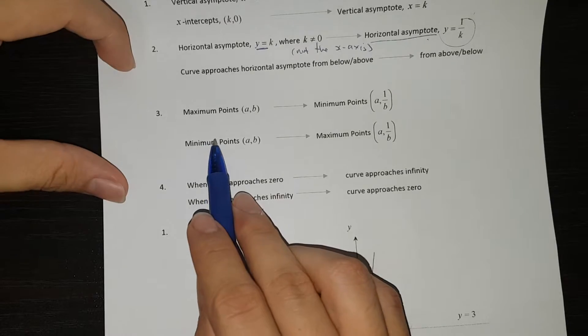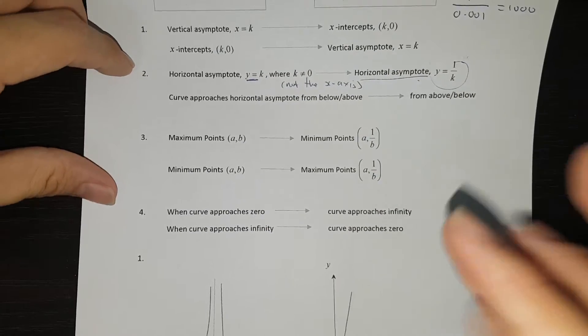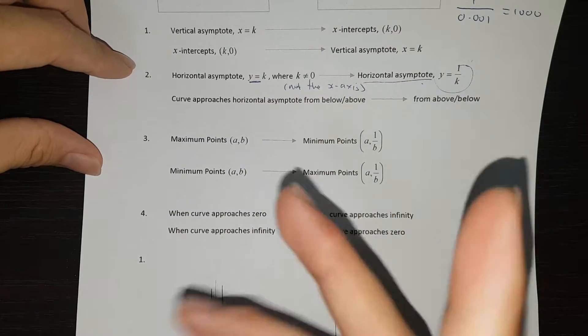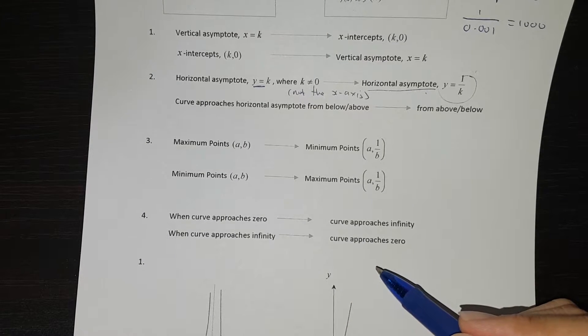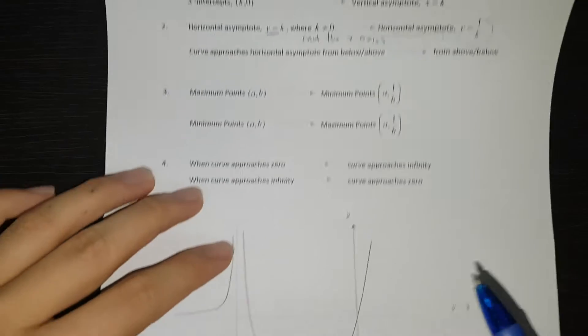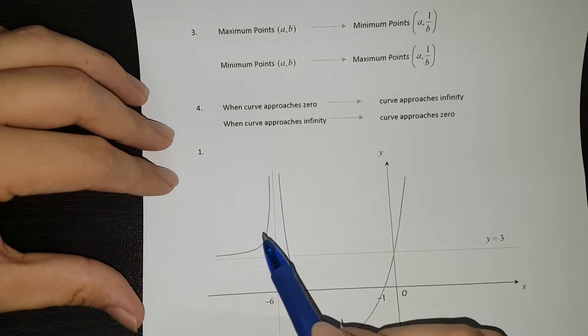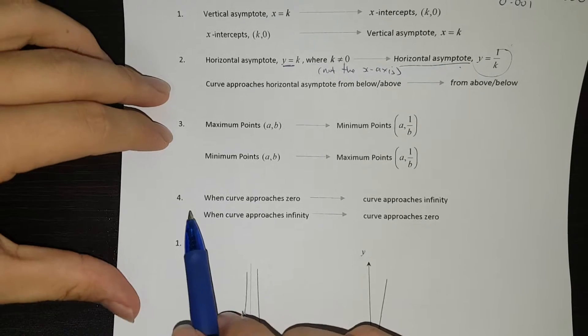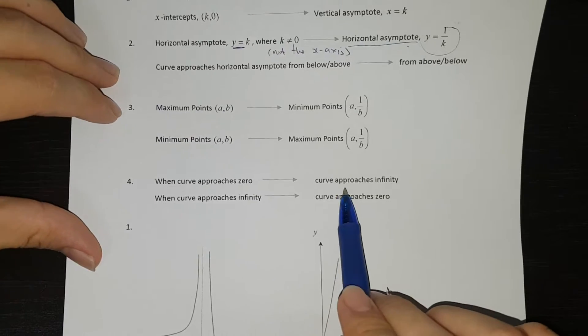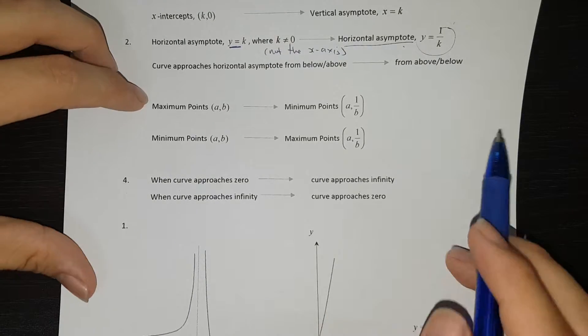Now, 3 is maximum point. It becomes minimum point. Minimum point becomes maximum point. Now, take note, when you reciprocal it means you're just taking the opposite. And please take note that when you reciprocal your graph, it will always remain, if let's say it's a positive region, it will remain a positive region. It won't change sign. If ever you do and you realize that your graph is on a different region, means something is wrong with your graph. Take note of that. Now, 4. When the curve approaches 0, it will tend to infinity. When curve approaches infinity, it will tend to 0.